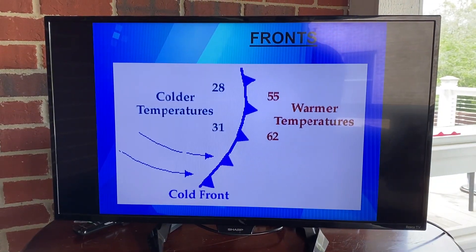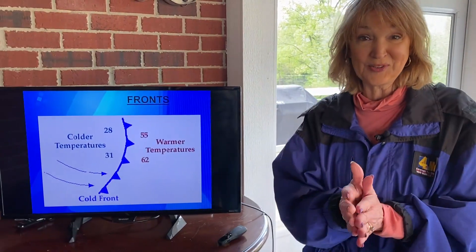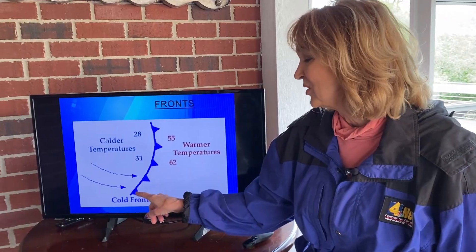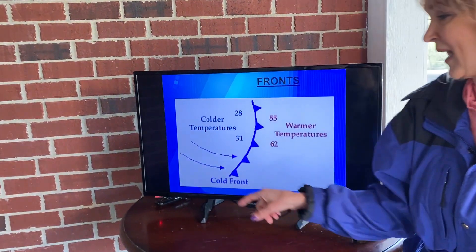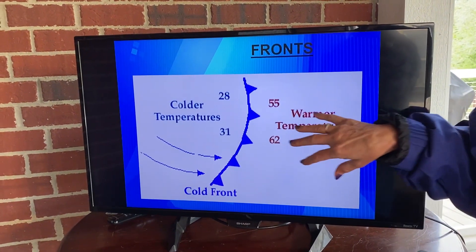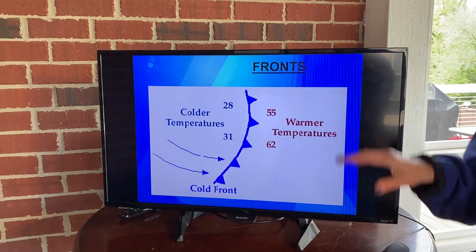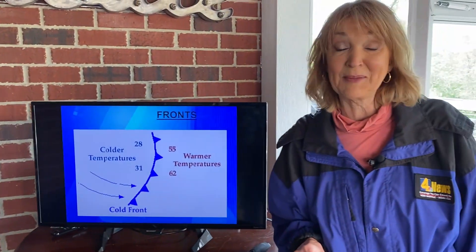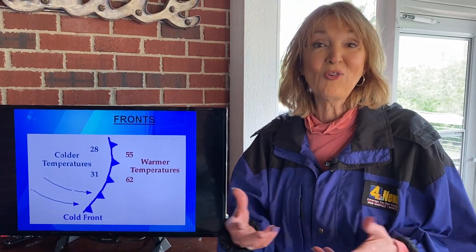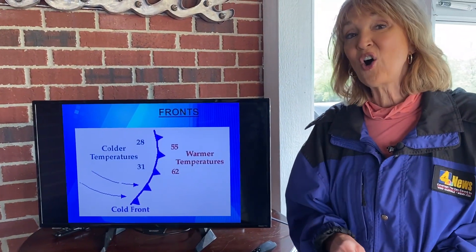Let's start with the cold front and learn what that means. I love the definition of a cold front because it's so easy to remember — it's the front of cold air. This blue line represents the front of some colder air. You can see it's 28 degrees, 31 degrees. Out ahead of this is the warmer air — 55 degrees and 62 degrees. Every part of this symbol means something. It's blue because blue represents cool colors or cold air, and these little triangles tell you which direction this cold front is moving.